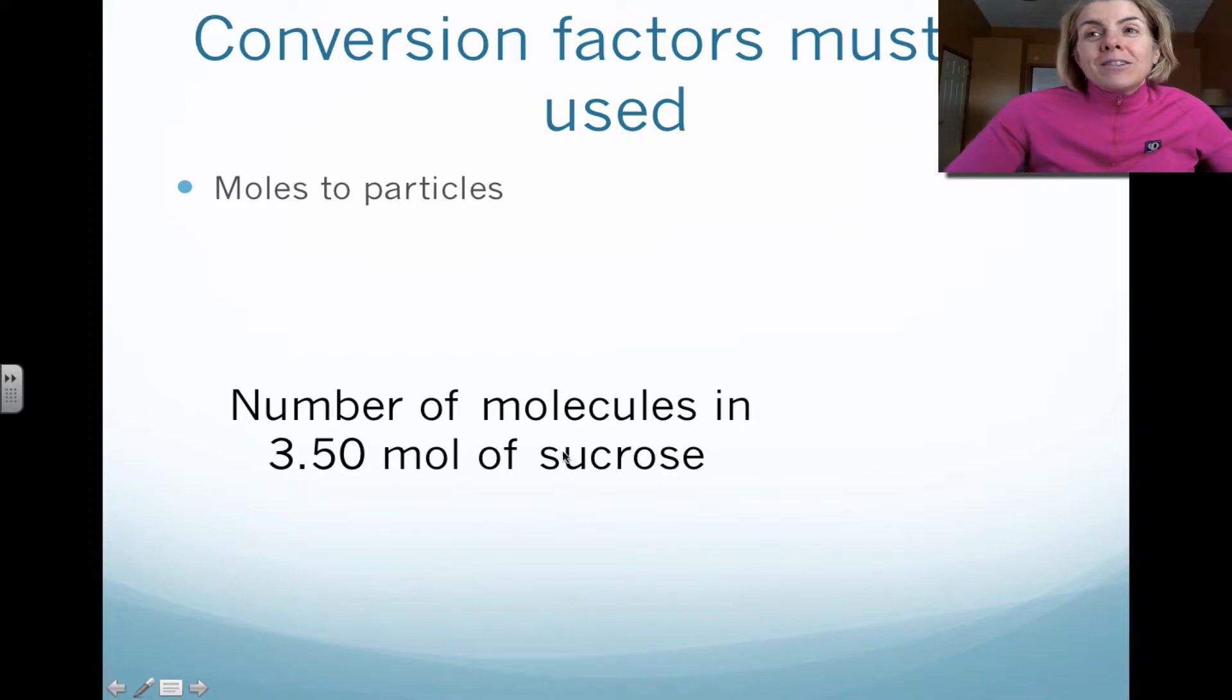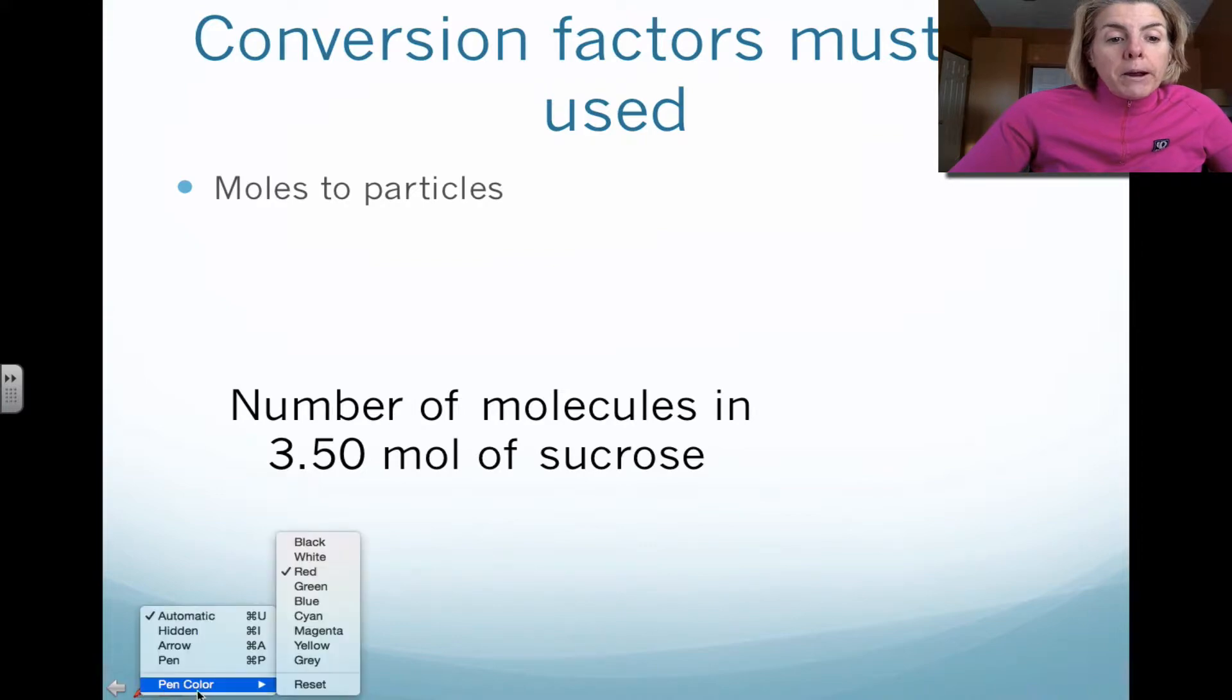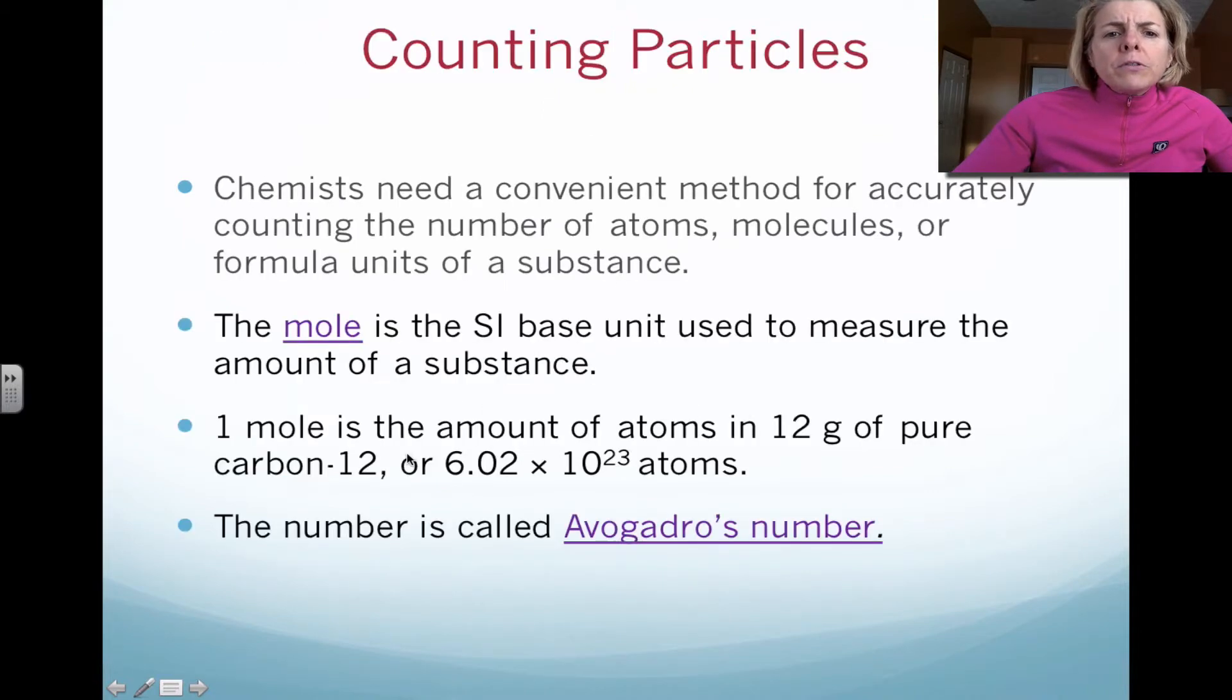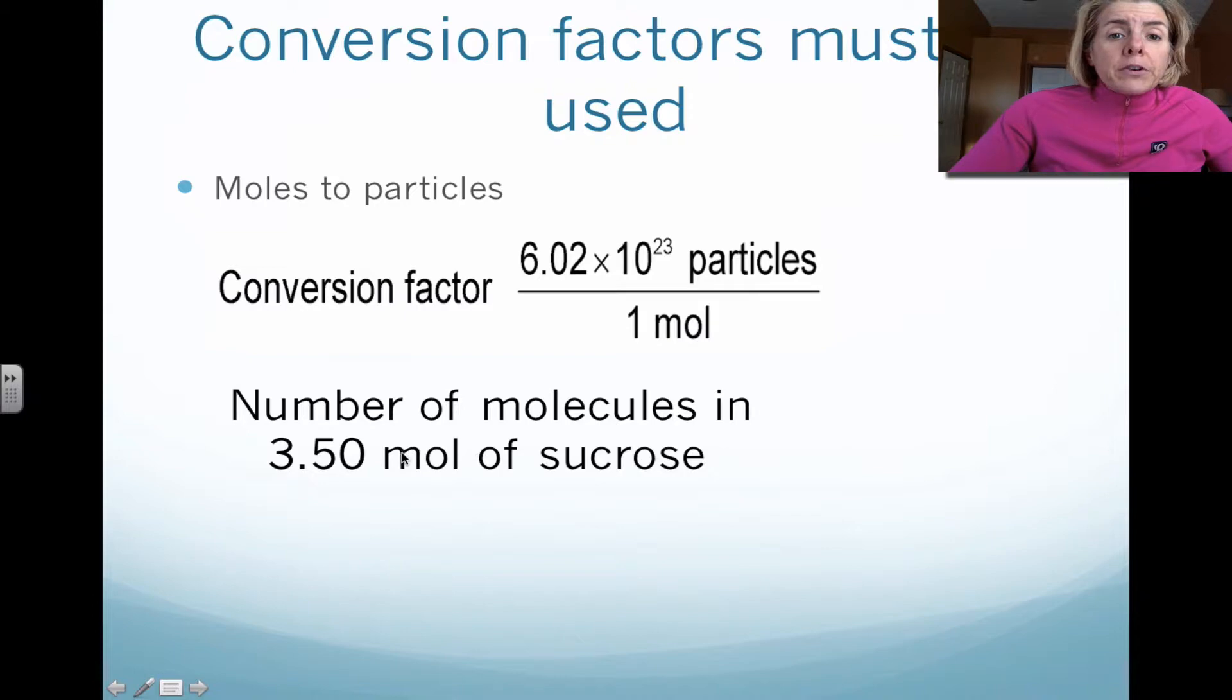Now let me show you how this counting device gets used. It's a conversion factor. And what we're going to do is look at how you convert moles to particles. So please note in this type of problem, we're looking at 3.5 moles of sucrose. Notice we dropped the E. That's just a way to abbreviate the term mole. So what we're going to do is use a conversion factor. And that conversion factor is 6.02 times 10 to 23rd. Notice that the particles is on top and the moles is on the bottom.